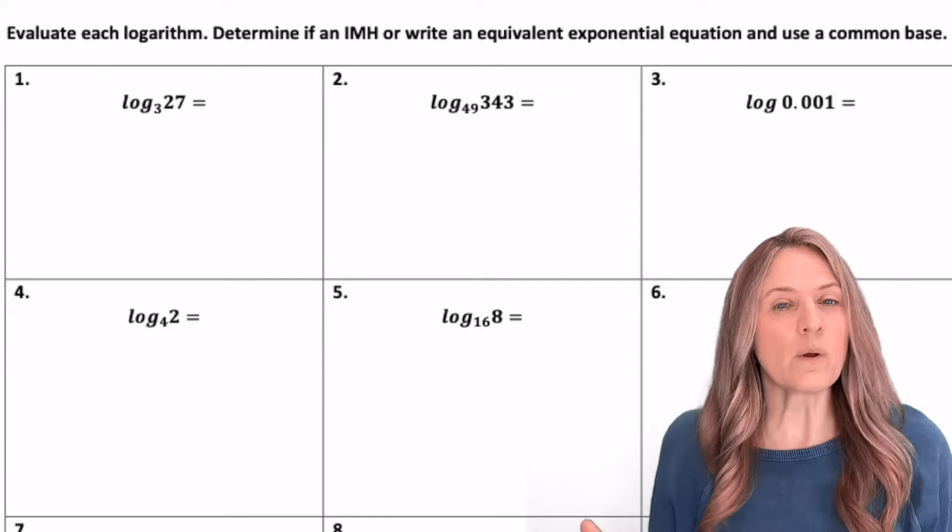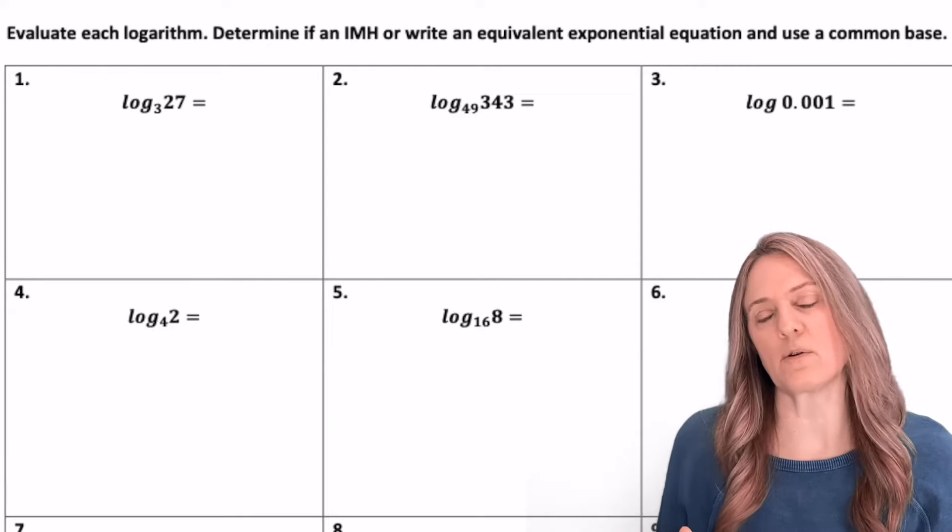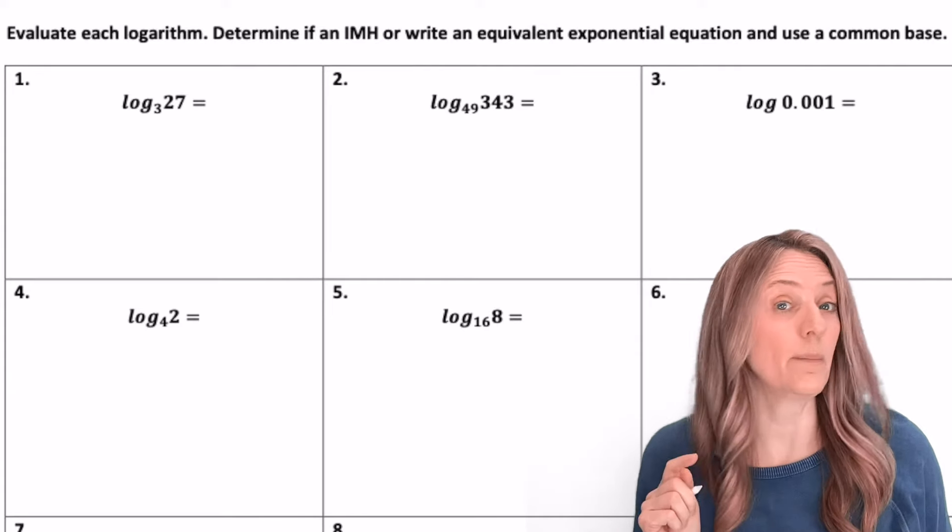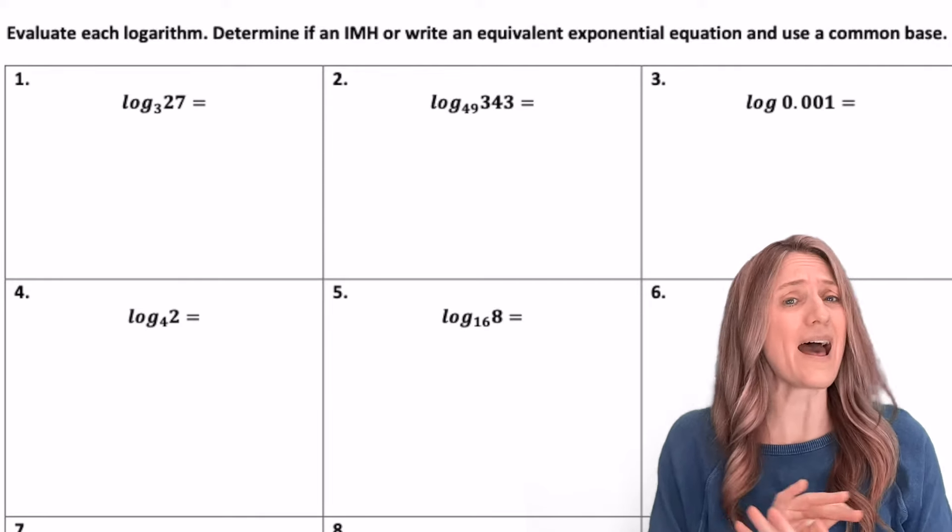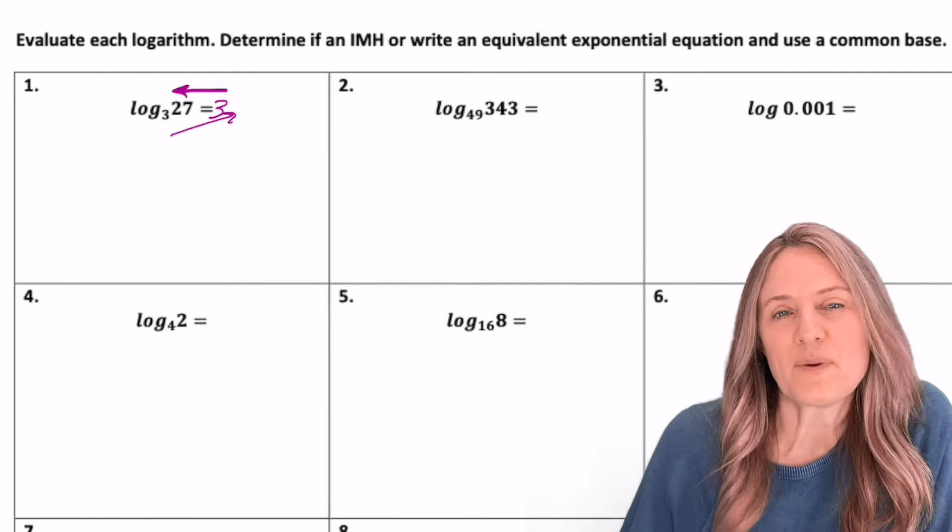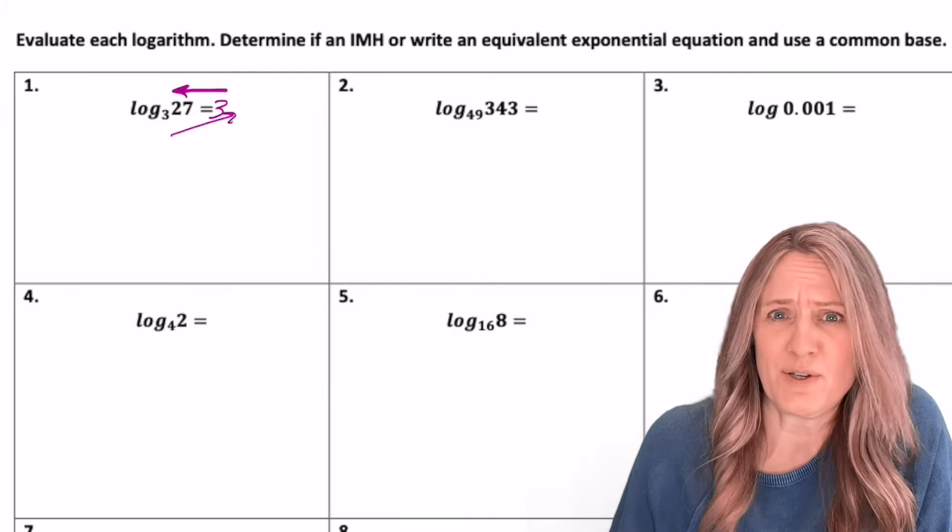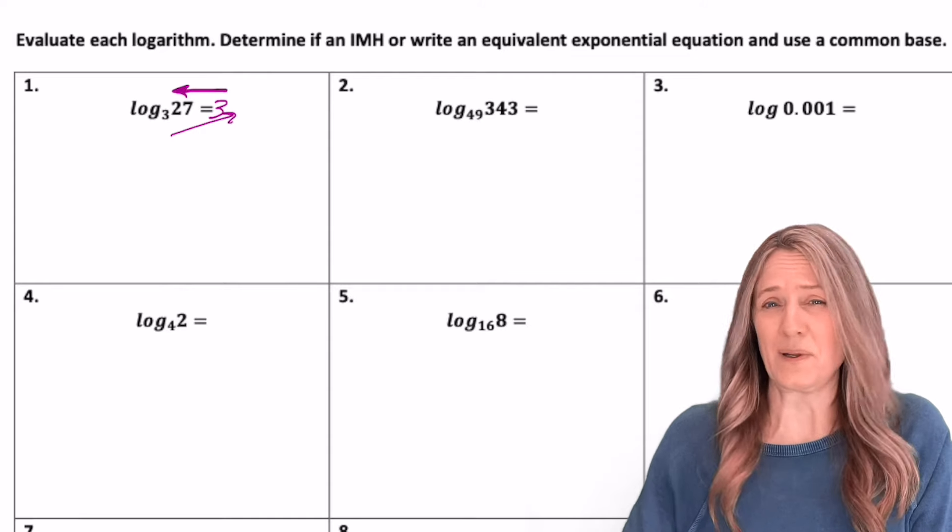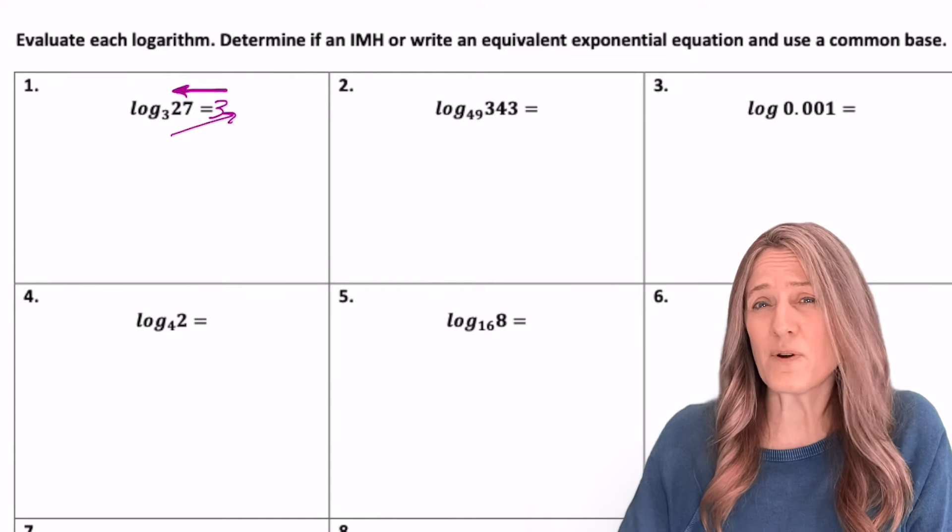Time to evaluate logarithms. And we want to be really comfortable with logarithms. Sometimes we can kind of just do them in my head, but other times, absolutely not okay. You have to show your thinking. Log base three of 27 equals three. Well, that one we can totally do in our head. But look at this next one. Log base 49 equals 343.